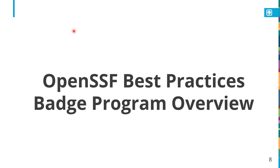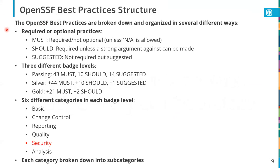The best practices are broken down and organized in several different ways. Practices can either be required or optional, with two levels of optional. Required ones are listed with the word 'must,' although many can be marked as 'not applicable' if they don't apply to your project. Practices listed as 'should' or 'suggested' — if you don't follow them, you have to provide a rationale for why you're not doing it. The practices are broken down into three different badge levels: passing, silver, and gold, each adding additional practices that are required or suggested.